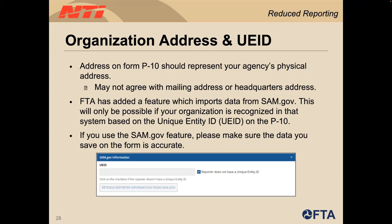Let's take a look at agency addresses and the Unique Entity IDs or UEID. Please note that the address on your P10 form represents your agency's physical address and it may not agree with your mailing address. In April 2022, there was a federal mandate to move away from using the Dunn and Bradstreet number to uniquely identify organizations. The Unique Entity ID is now used to identify a specific commercial, nonprofit, or government entity. The NTD queries information from SAM.gov using the Unique ID, which helps keep the physical address of your agency updated on the identification form or P10 form. Please make sure this field is current and accurate.